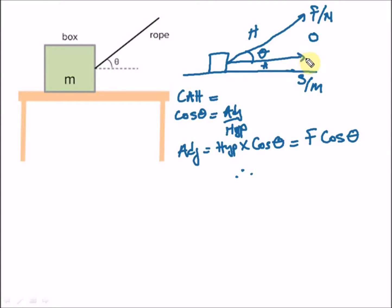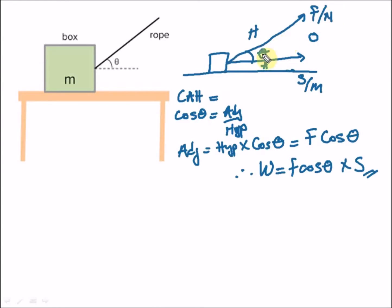Therefore, as stated earlier, our work done equals the resolved component multiplied by the distance covered. So work done = F cos θ × s. This is how you find the work done when the force is inclined at an angle to the displacement.